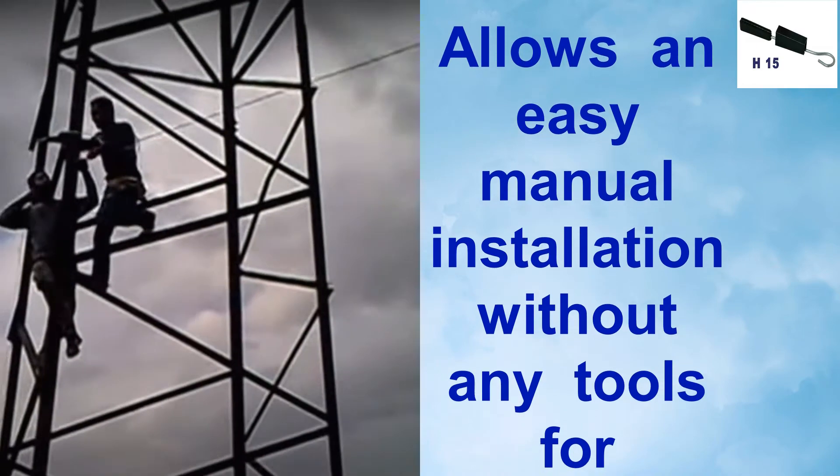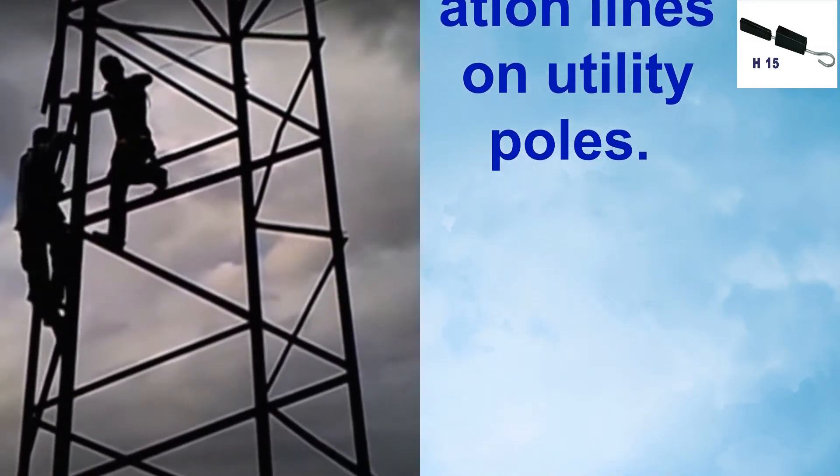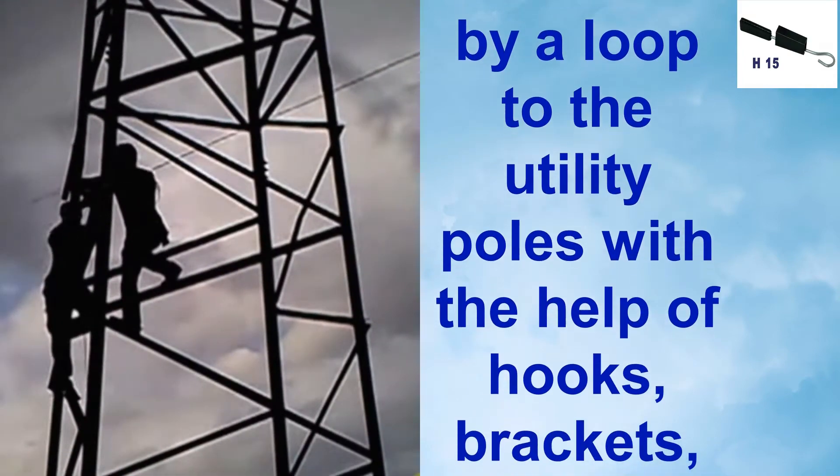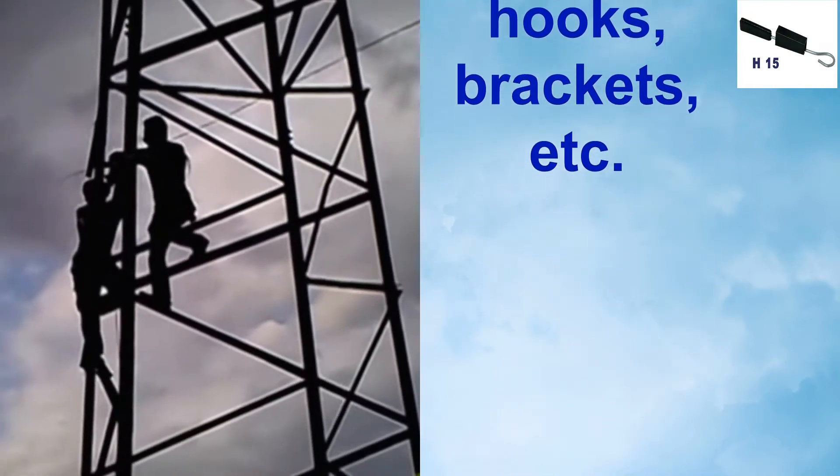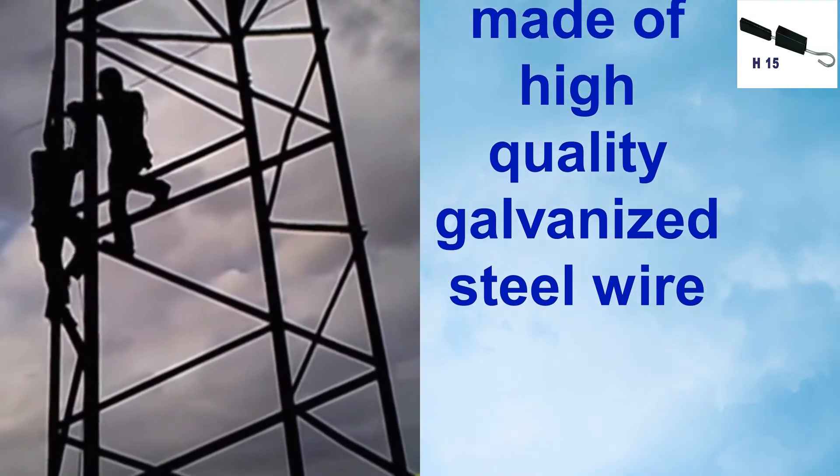Allows an easy manual installation without any tools for building overhead communication lines on utility poles. It fastens by a loop to the utility poles with the help of hooks, brackets, etc. The loop is made of high-quality galvanized steel wire.